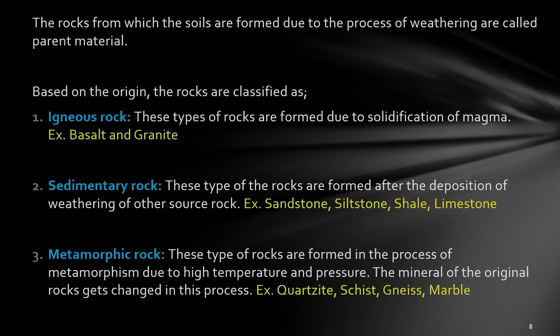The rocks from which soils are made are generally divided into three types: igneous rock, sedimentary rock, and metamorphic rock. Igneous rocks are formed due to the solidification of magma — examples are basalt and granite. Sedimentary rocks are formed after the deposition and weathering of other source rocks — examples are sandstone, siltstone, shale, and limestone. Metamorphic rocks are formed in the process of metamorphism due to high changes in temperature and pressure, where the mineral of the original rock gets changed — examples are quartzite, marble, and schist and gneiss.